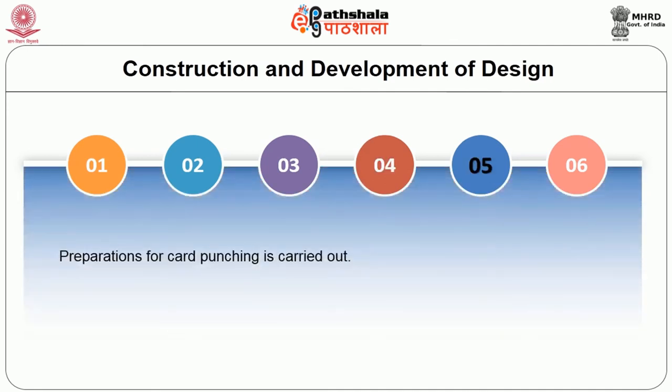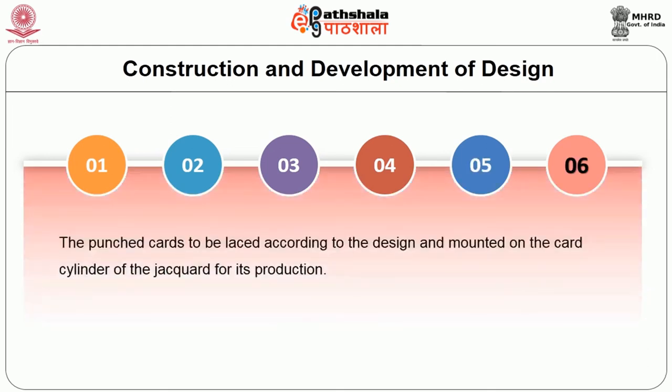Following this preparation — from the selection of the motif, enlargement, and transfer onto the graph sheet — the card punching stage begins. The graph sheet has to be squared out in black in rows of 8 corresponding to the size of the jacquard. Once blacked out, using a suitable card cutting machine the card is punched, and the punched cards are laced together. The laced cards are then mounted onto the jacquard to produce the fabric.